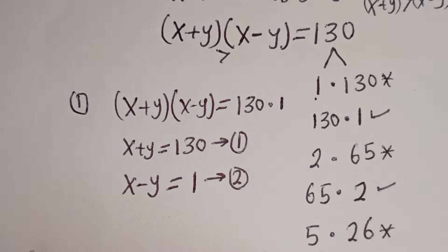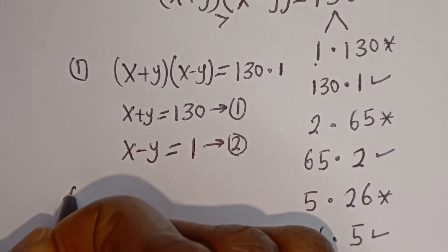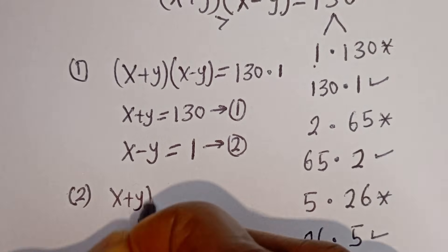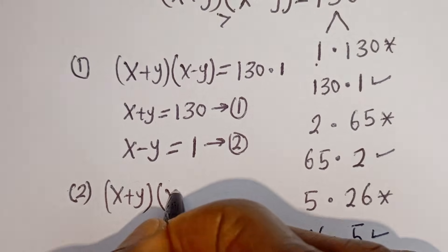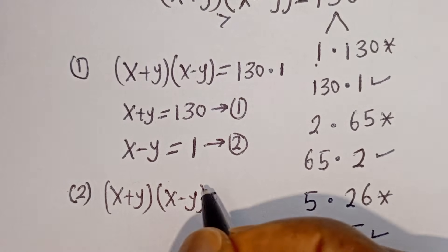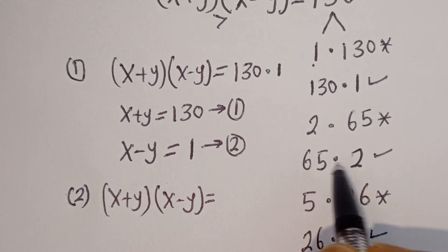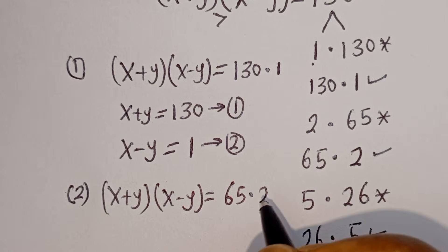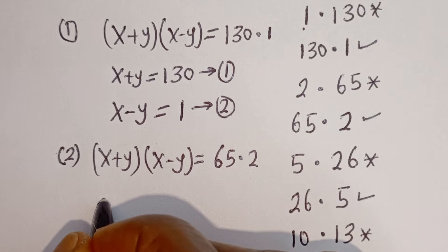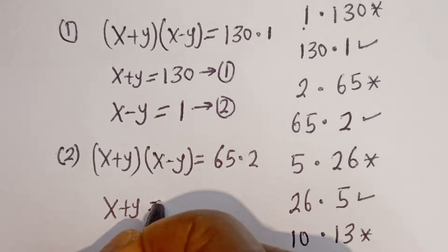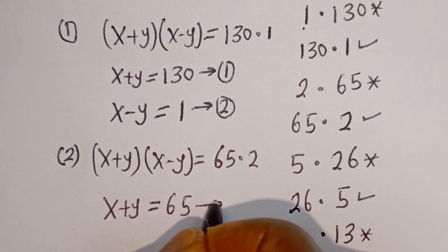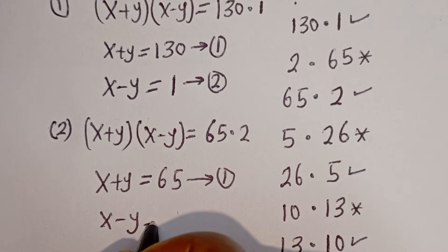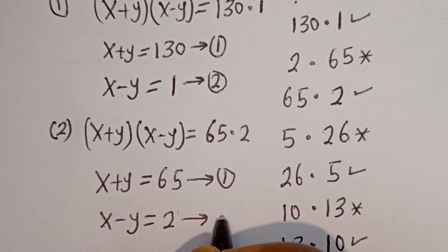For the second case, (X + Y)(X − Y) = 65 × 2. The equations are: equation 1: X + Y = 65, and equation 2: X − Y = 2.